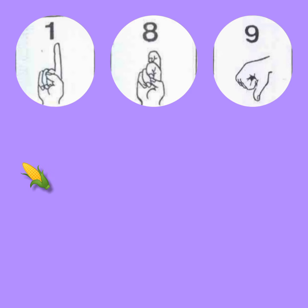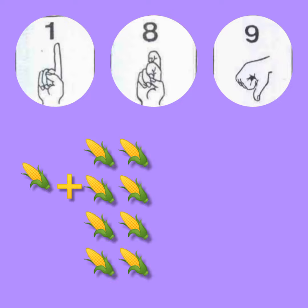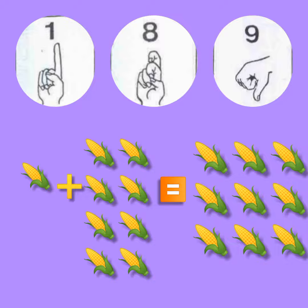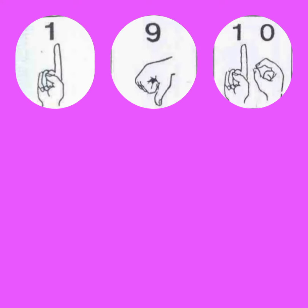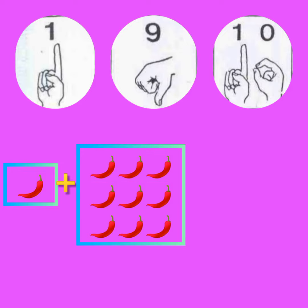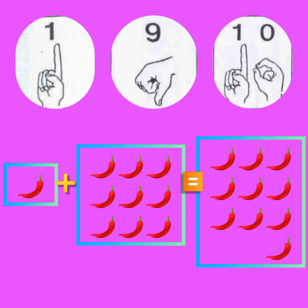Question number nine. One corn plus eight corns equals to nine corns. Question number ten. One chili plus nine chilies equals to ten chilies. Question number six.